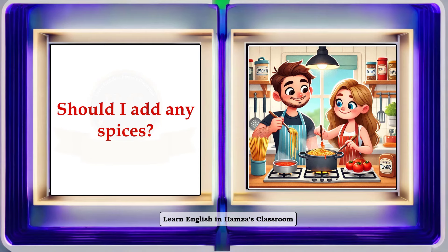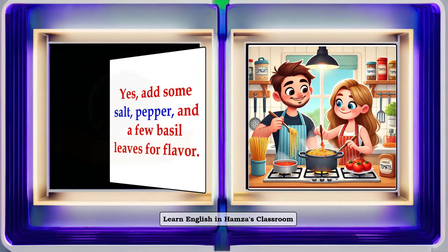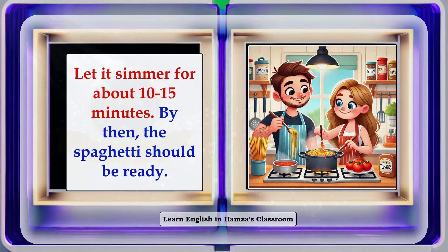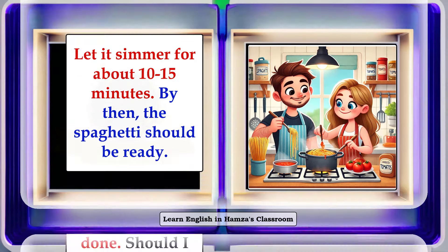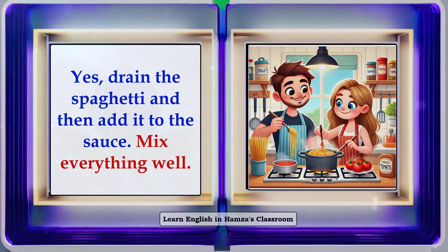Should I add any spices? Yes, add some salt, pepper, and a few basil leaves for flavor. This is starting to smell really good. How long do we cook the sauce? Let it simmer for about 10 to 15 minutes. By then, the spaghetti should be ready. The spaghetti is done. Should I drain it? Yes, drain the spaghetti and then add it to the sauce. Mix everything well.